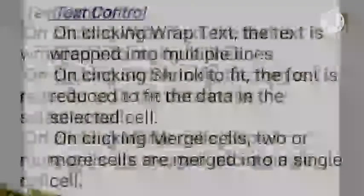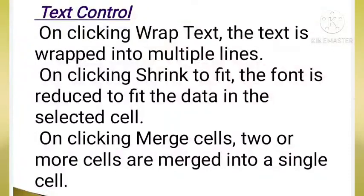Now, we are going to learn something about text control. When we click on wrap text, the text is wrapped into multiple lines. Next, when we click on shrink to fit, the font is reduced to fit the data in the selected cell. When we click on merge cell, two or more cells are merged into a single cell.